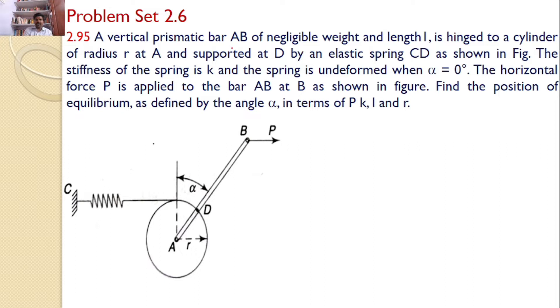A vertical prismatic bar AB of negligible weight and length L is hinged to a cylinder of radius r at A and supported at D by an elastic spring CD as shown. The stiffness of the spring is K and the spring is undeformed when alpha equals 0. The horizontal force P is applied to the bar AB at B as shown in the figure.